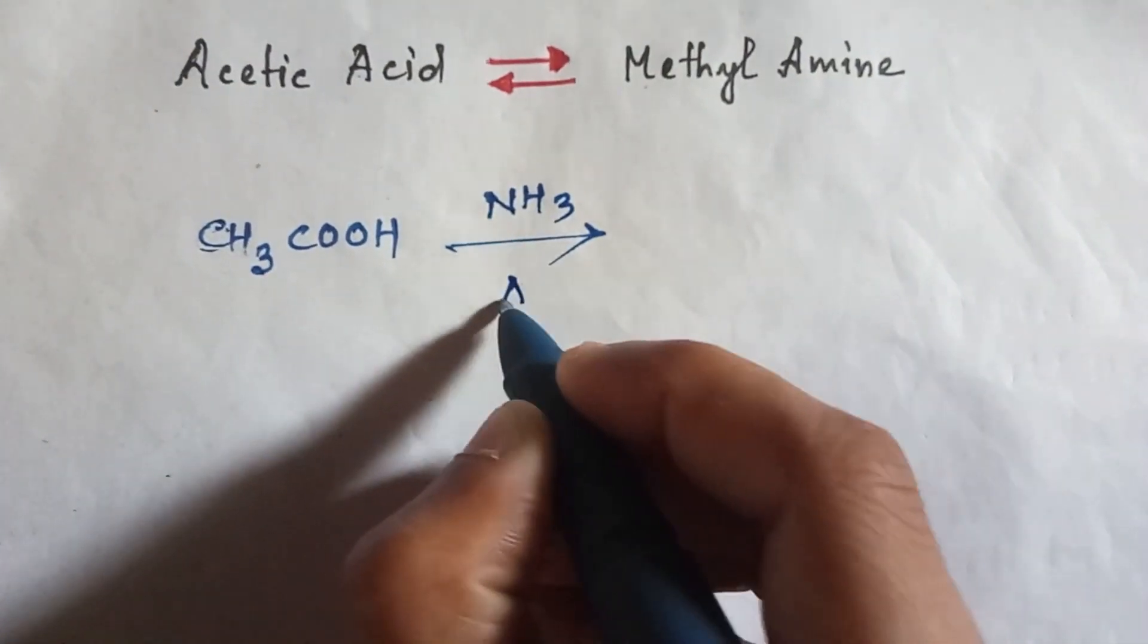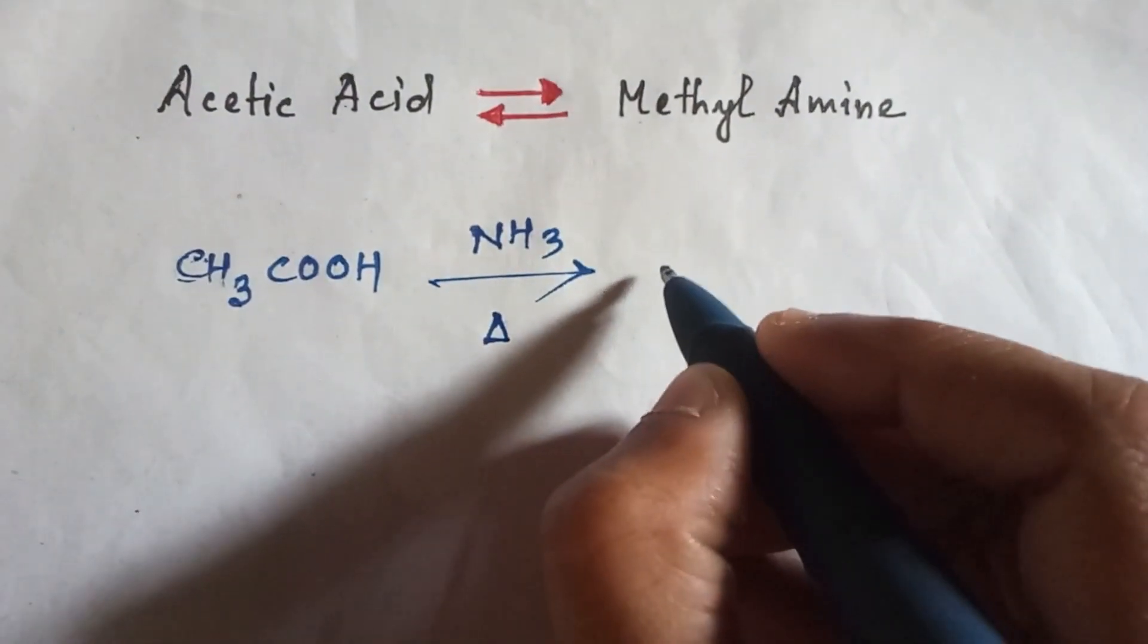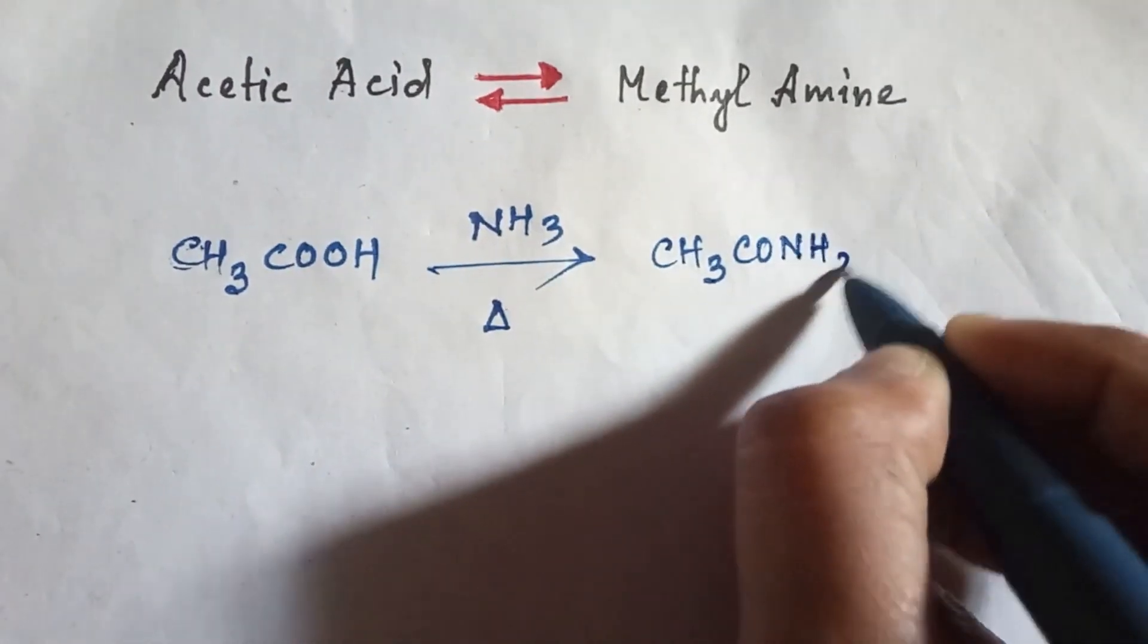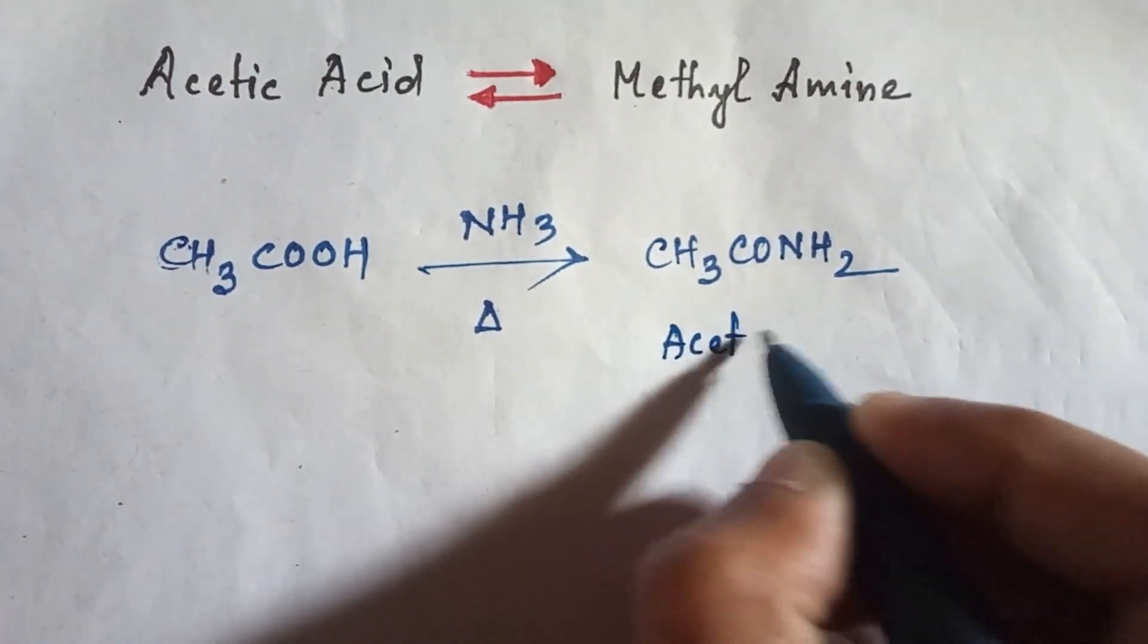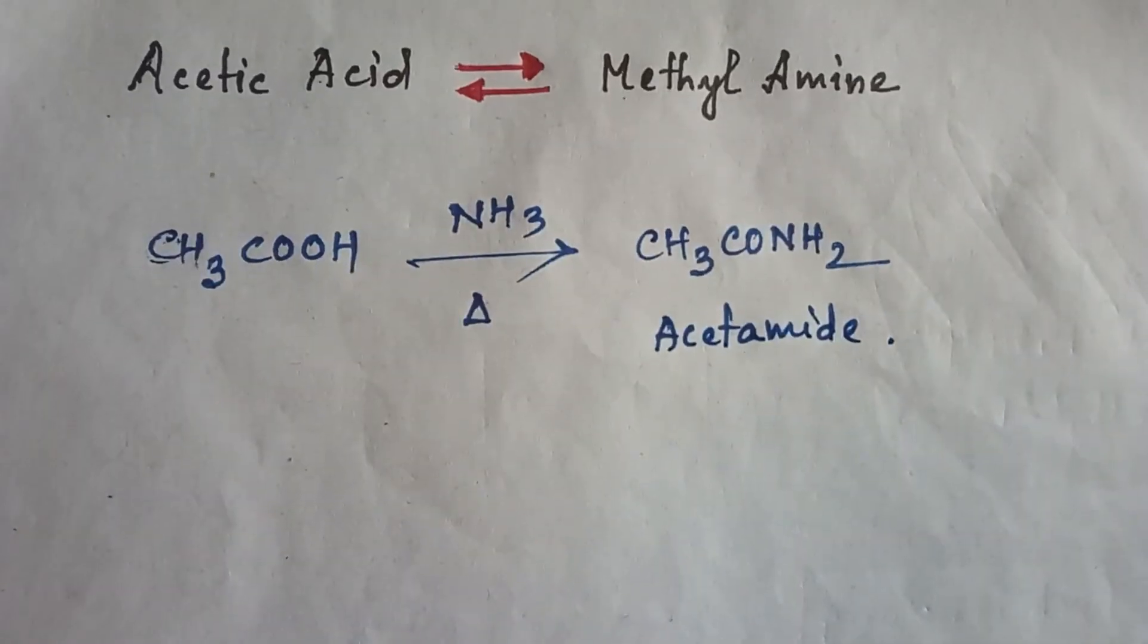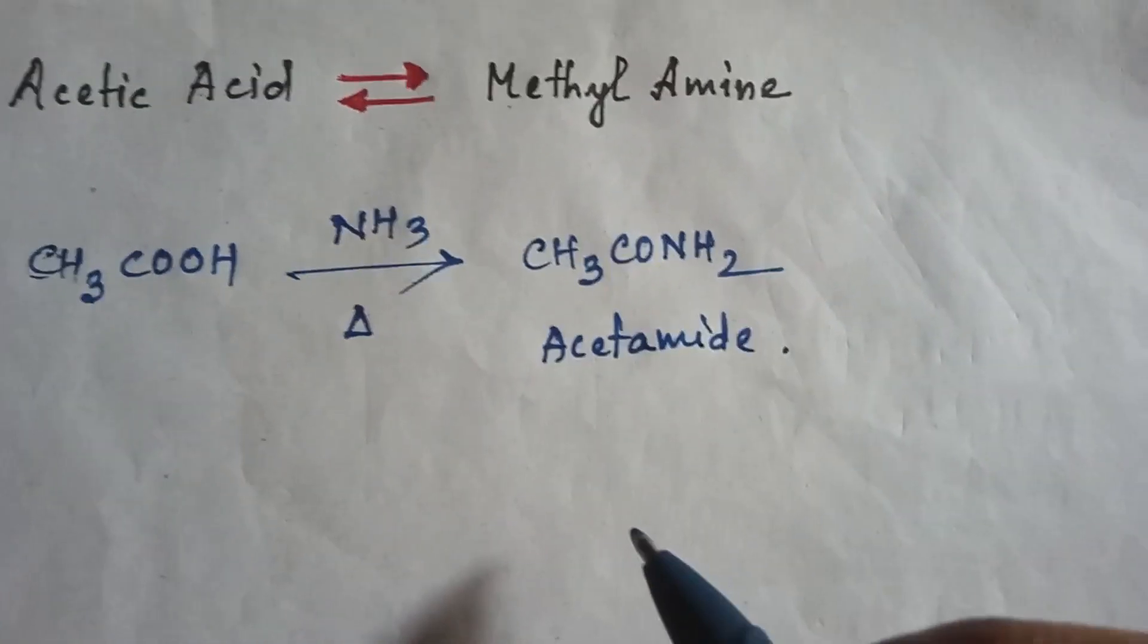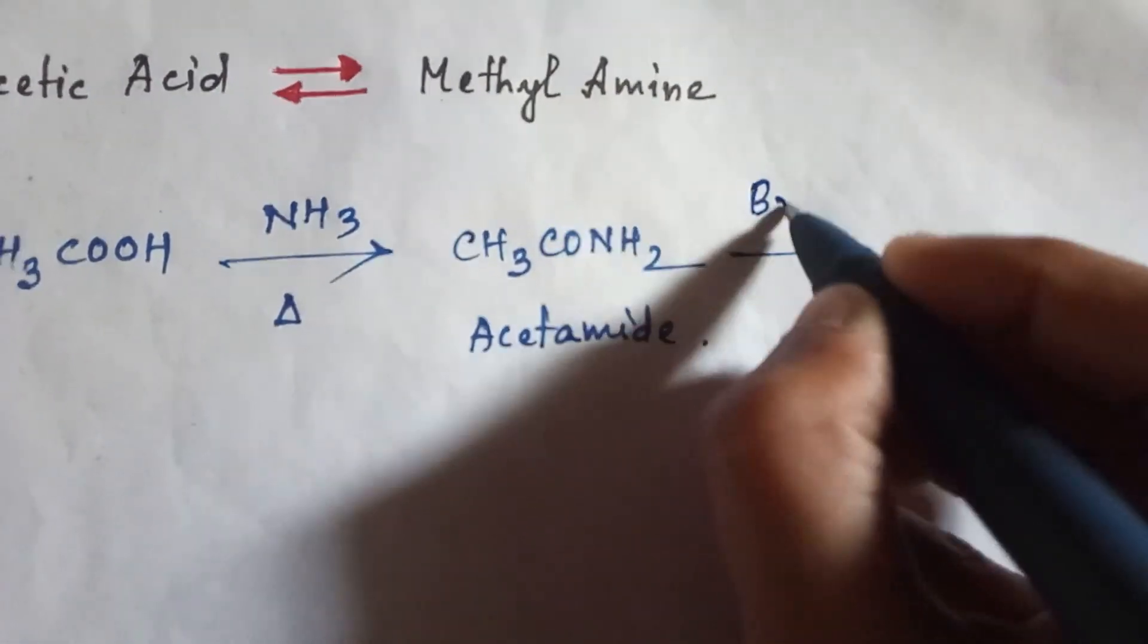And here the amide will be CH3CONH2, that is acetamide. So this is acetic acid, this is acetamide. Now in acetamide, if you add here Br2 and KOH, this is the reagent of Hofmann bromamide degradation.